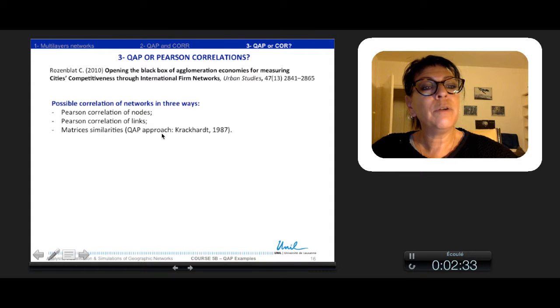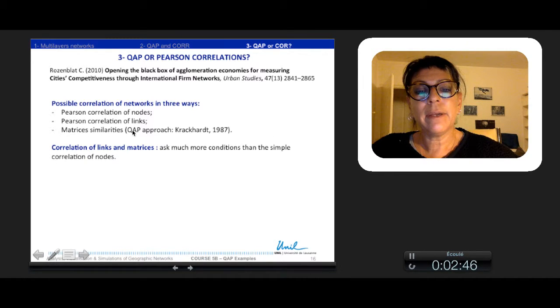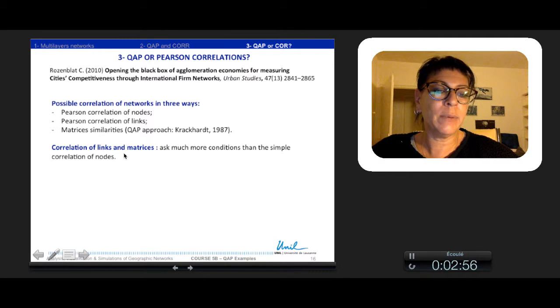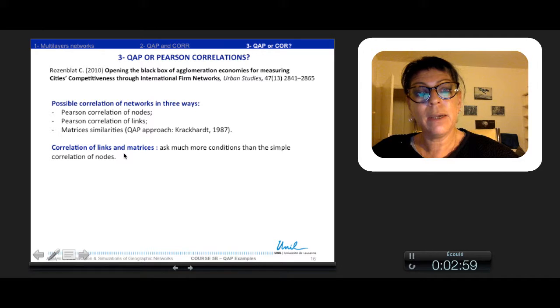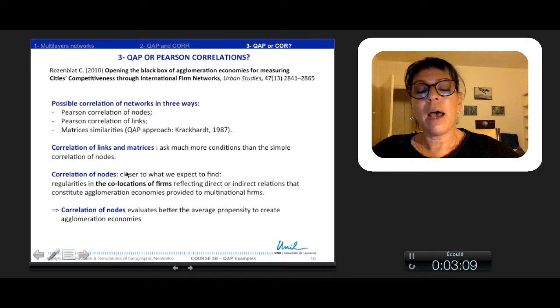We could implement three levels of correlation, like in the previous example, at the level of nodes, of links, or the entire network with QAP correlation. We saw that correlation of links or on-the-wall matrices ask much more conditions than the nodes' correlations. But coming back to our initial question, we expect regularities of co-location of firms in order to reveal the agglomeration economies they can produce together. So nodes' correlations are the right choice in order to evaluate the average propensity to create agglomeration economies.